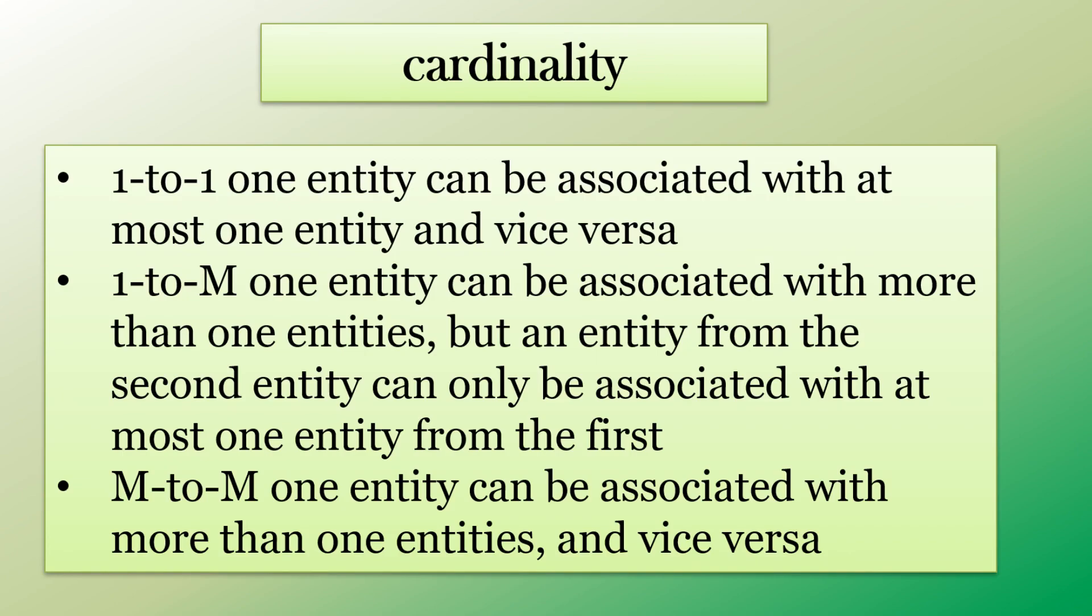A one-to-one would mean one instance, say for example a customer, is associated with at most one entity, like an order. Only one customer can make one order, and one order can only be from one customer. That would be a one-to-one relationship. One-to-many means that one entity, a customer, could have many orders, but the orders would come from one entity from the first. So it's not the same as many-to-many. In many-to-many, one entity could be associated with more than one entity, and vice versa. You could have an order that has many customers on that one order, and one customer that could make many orders. That would be many-to-many.